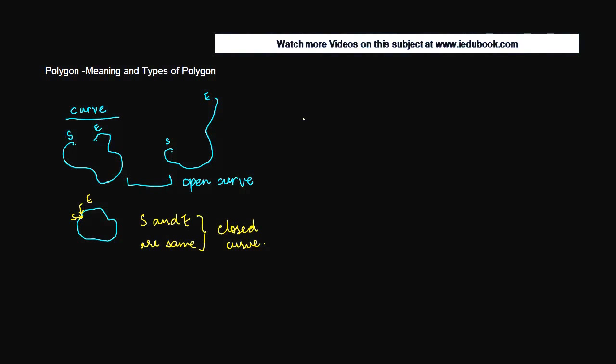Again, in case of curves, there can be two situations. Let's say you have something like this and let's say you have something like this. So what is the principal difference that you can see between these two?